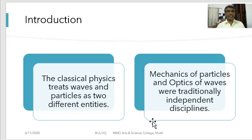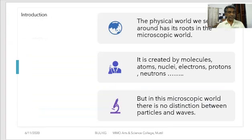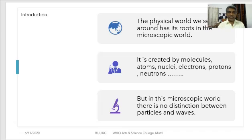Whatever we see around us in our physical world has roots in the microscopic world. Everything around us is created by molecules and atoms. Atoms are constituted by nuclei and electrons; inside the nuclei there are protons and neutrons, and protons and neutrons are created by quarks.